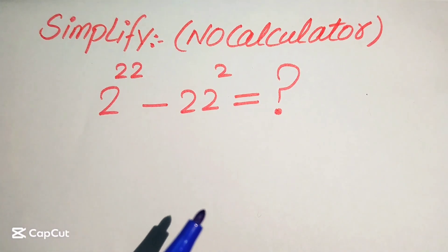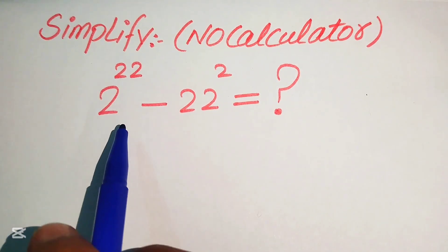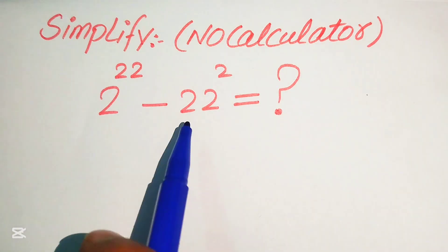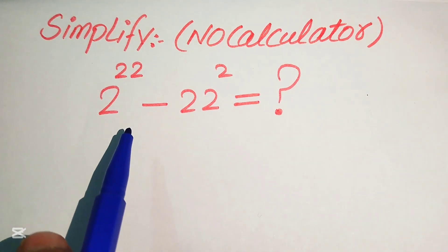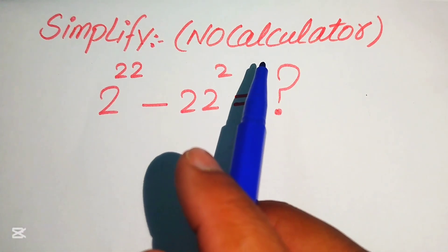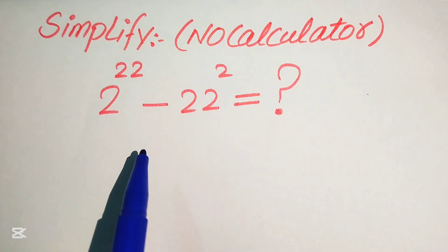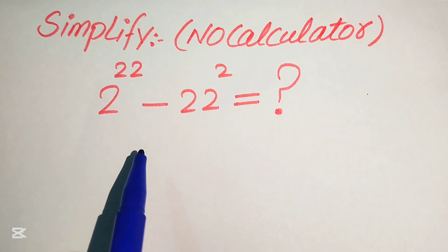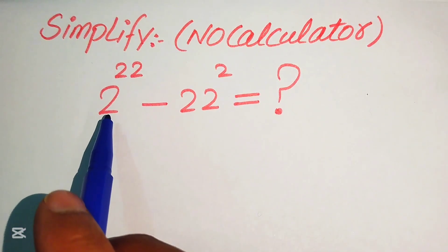Hello everyone. How to simplify this nice algebraic expression: 2 to the power of 22 minus 22 to the power of 2. We write this into simplified form, but remember that a calculator is not allowed in this problem, so we will show all of the working on paper.